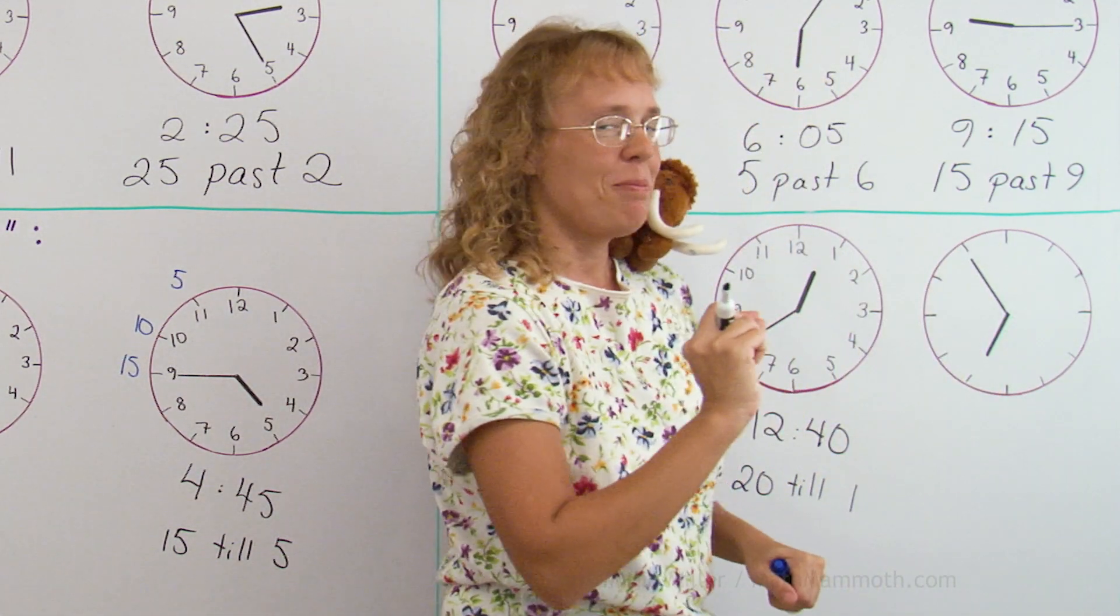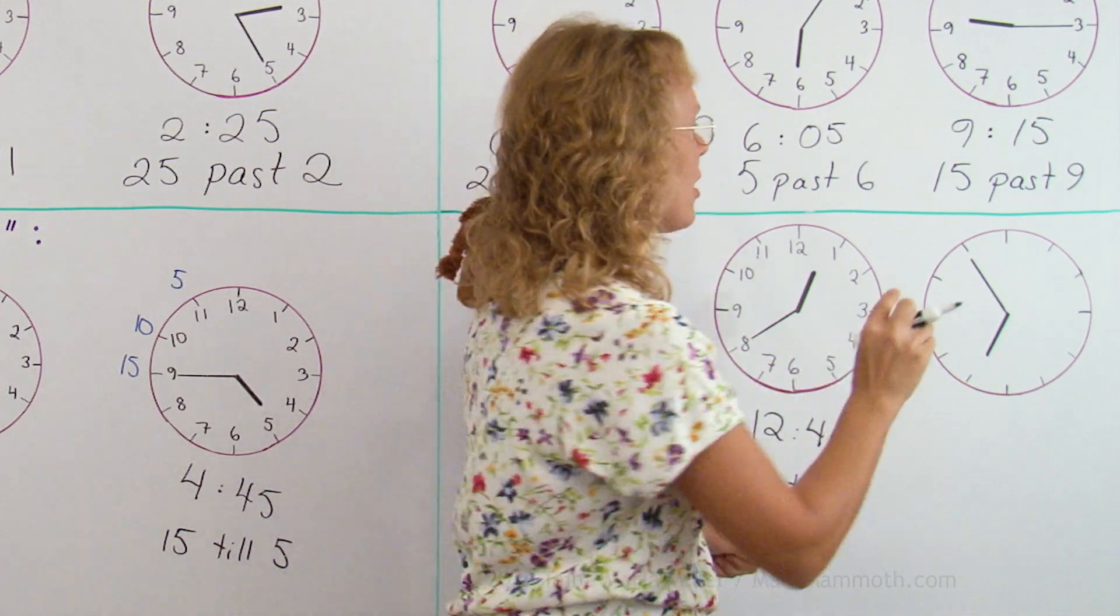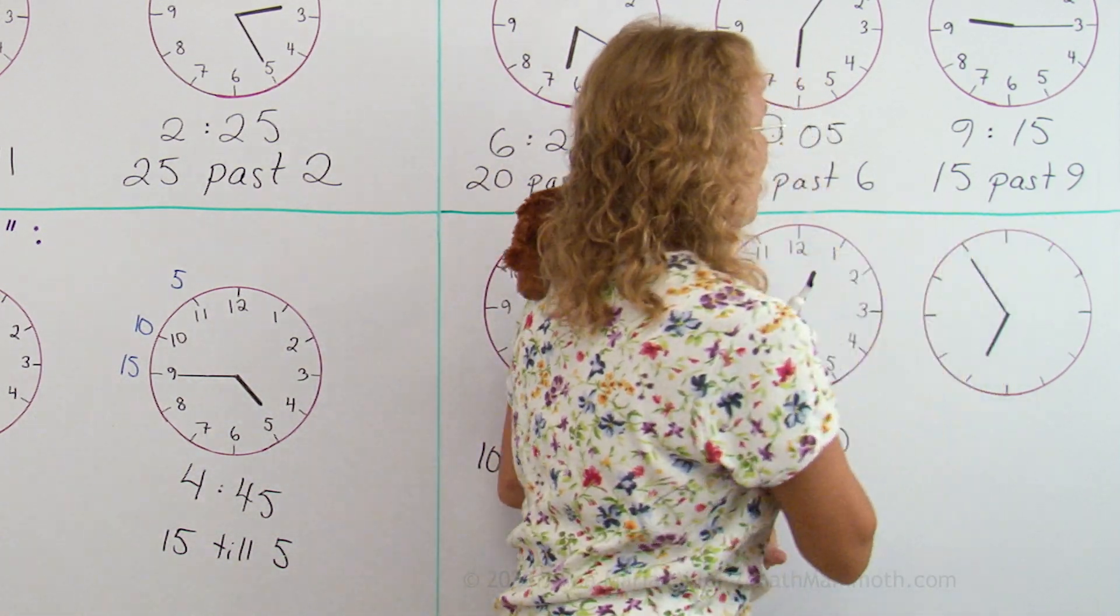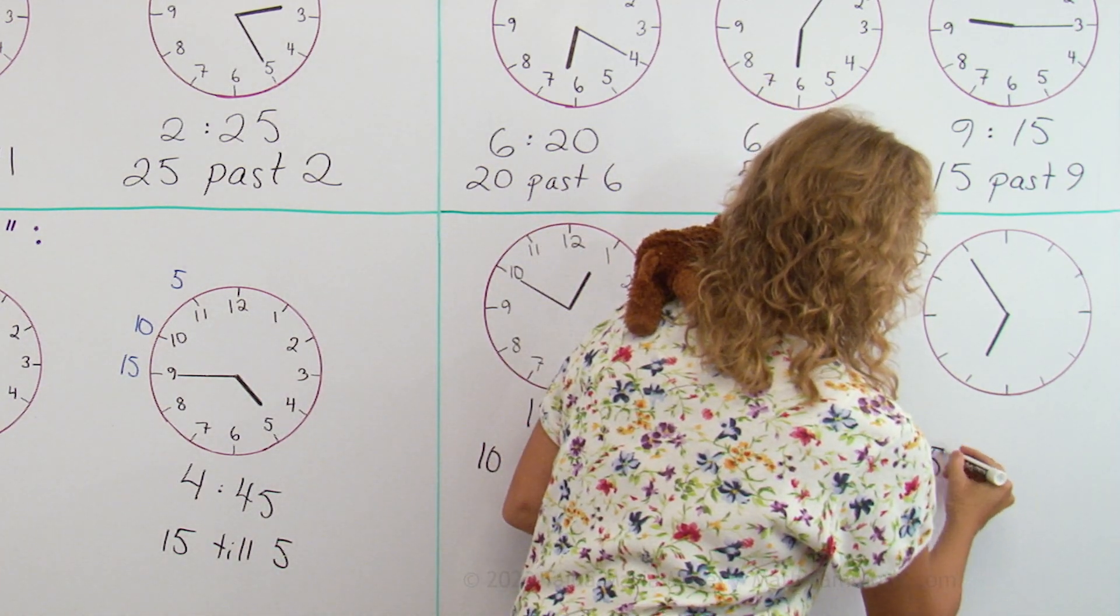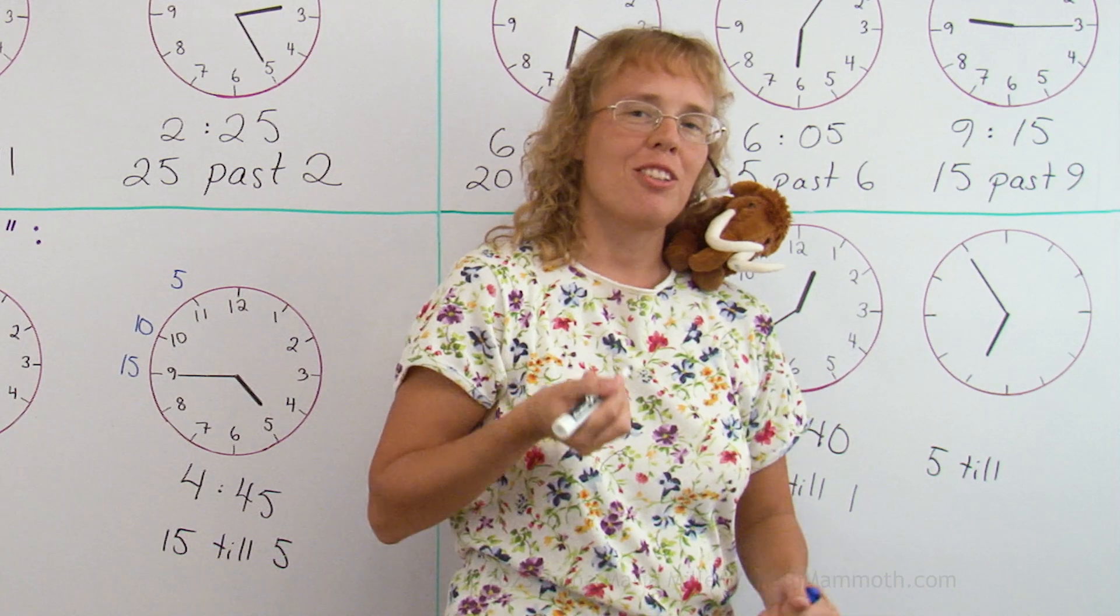So, it's not 1 minute till something, it is 5 minutes till, because one step here means 5 minutes. It is 5 minutes till the next whole hour. What is the next whole hour?